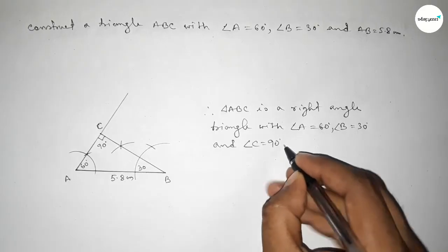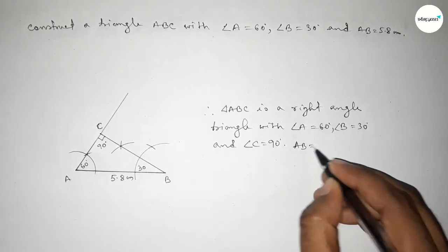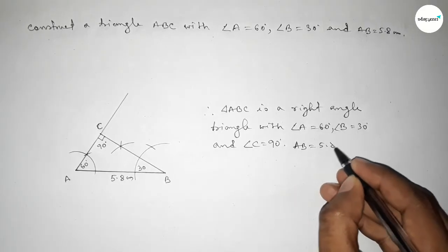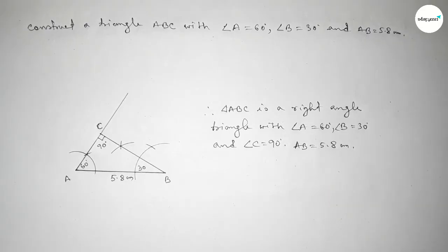Angle C equals 90 degrees and given side AB equal to 5.8 centimeters. That's all — thanks for watching. If this video is helpful to you, please share it.